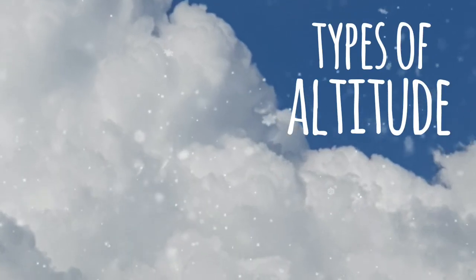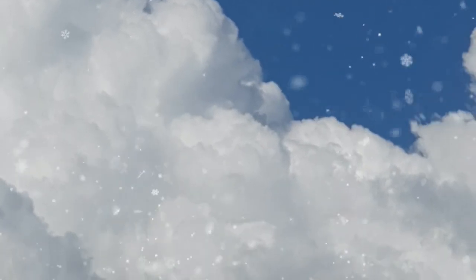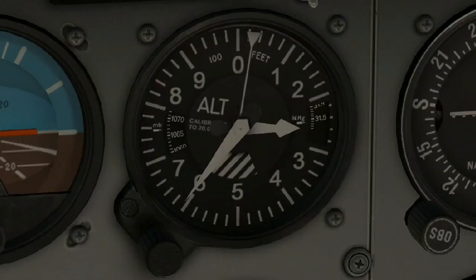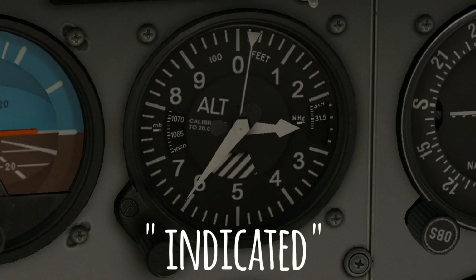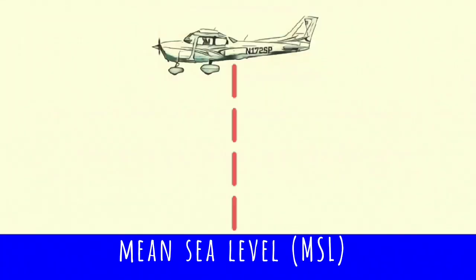What are the different types of altitude? Altitude is the vertical distance above a reference point. Indicated altitude is simply the altitude visible on the altimeter — it is the aircraft's vertical distance above mean sea level.